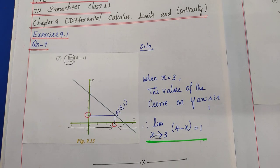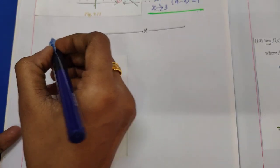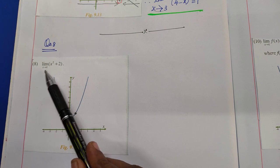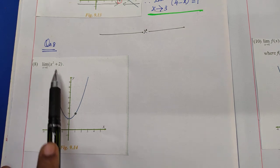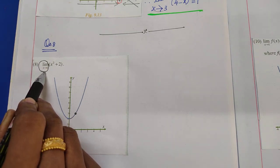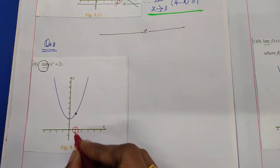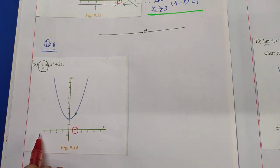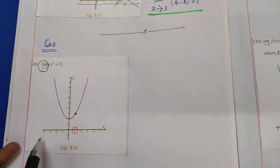Now question number 8. We estimate the limit x tends to 1 of (x squared plus 2). We estimate the limit value of the given question using this graph. Here our limit is at x = 1, and the point 1 on the x-axis is this position. The points 0, minus 1, minus 2, minus 3, minus 4 and so on are all leftwards of plus 1.